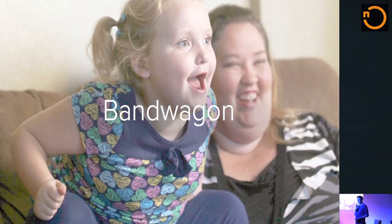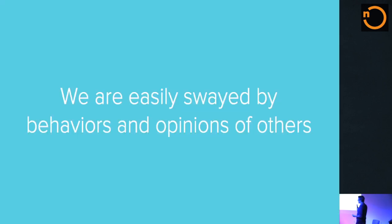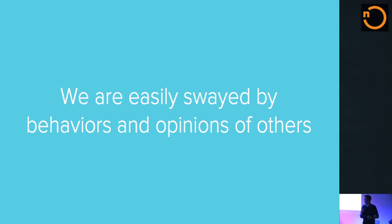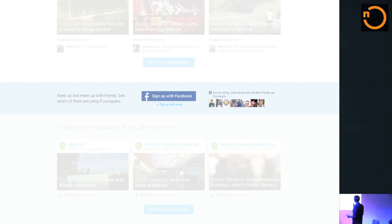Let's talk about bandwagons. We are easily swayed by the behaviors and opinions of other people. We may think we're carving our own fate entirely on our own, but we're not. We're very easily swayed by the opinions of others. Other people in aggregate can usually be trusted — not always, but it's why you see social proof like Foursquare: 'Spencer, Caleb, and 16 of your other friends are already using Foursquare, so obviously you should be too.'